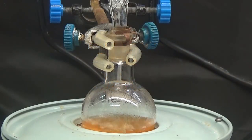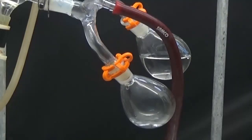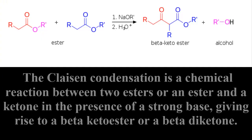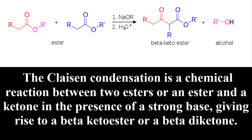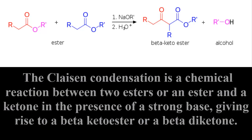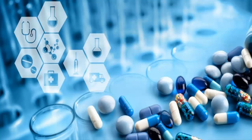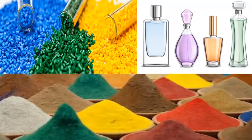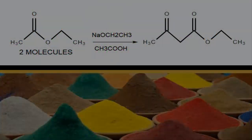In this video, we will get ethyl acetoacetate via Claisen condensation. The Claisen condensation is a chemical reaction between two esters or an ester and a ketone in the presence of a strong base, giving rise to a beta-ketoester or a beta-diketone. Ethyl acetoacetate is used as an intermediate in the production of pharmaceutical compounds such as analgesics and antibiotics, and in the manufacture of colorants, plastics, and perfumes.